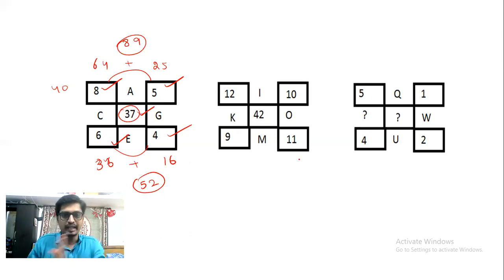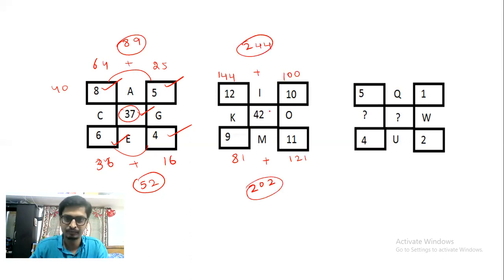Now coming to the second flower, you have 12. So 12 square is 144, and 10 square is 100. Now when I sum it, I get 244. Now 9 square is 81, and 11 square is 121. If I add it, I get 202. Now what is the difference between 244 and 202? I get 42.